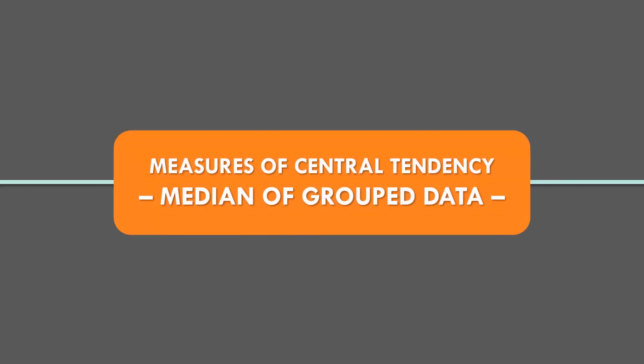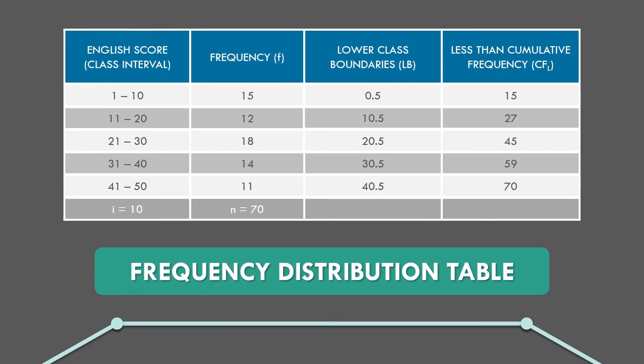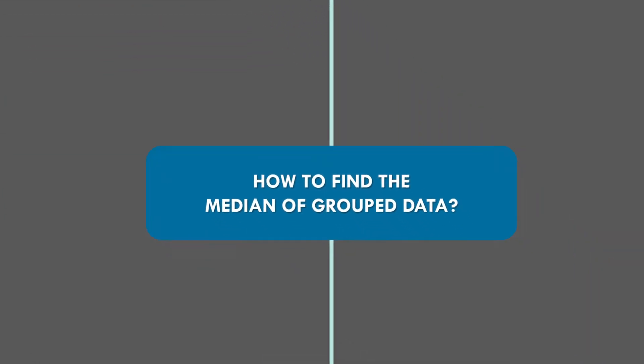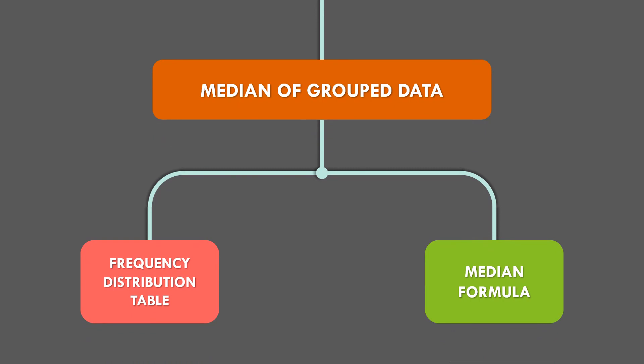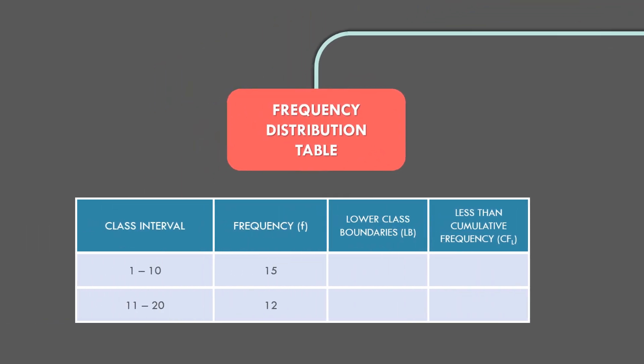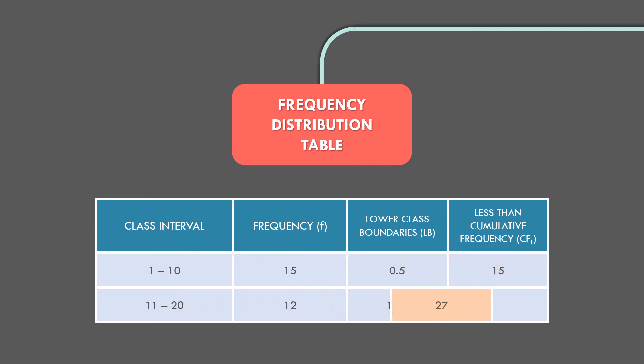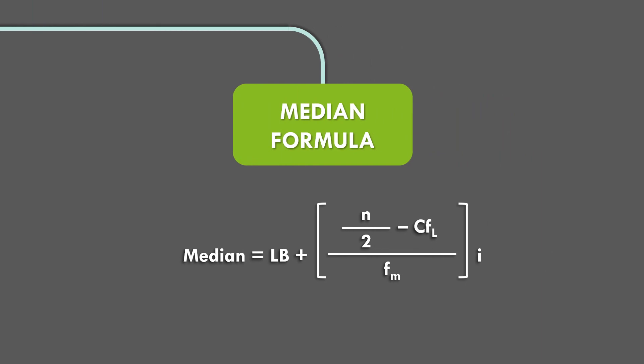Let us recap what you have learned about the measures of central tendency — median of grouped data. It is important that we have the frequency distribution table for the median of grouped data. To find the median of grouped data: first, set up the frequency distribution table with the class interval, frequency, lower class boundaries, and less-than cumulative frequency. Second, apply the median formula: Median equals LB plus the quantity N over 2 minus CF sub L, all over F sub M, times the interval.